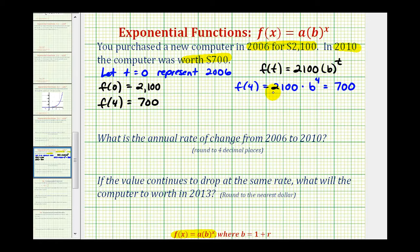So the first step is dividing both sides by 2,100. So we have b to the fourth equals, this simplifies to one-third. And now we want b, not b to the fourth. So we can take the fourth root of both sides or raise both sides to the one-fourth power. Remember when we have powers to powers we multiply the exponents. So on the left we just have b to the first or b.